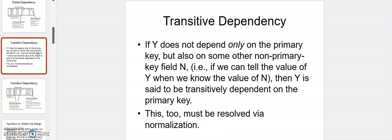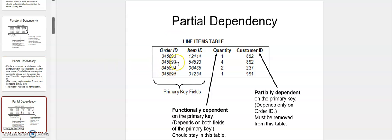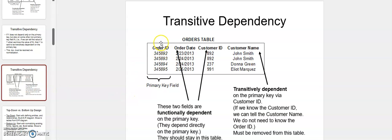Let's move on to the third kind of dependency: transitive dependency. The idea is that if you have an attribute that is dependent not only on the primary key but also on a non-primary attribute, that's transitive dependency. With partial and functional dependency, we observed that attributes are dependent on the primary key or at least one of two primary keys. But with transitive dependency, an attribute is dependent on a non-primary attribute.